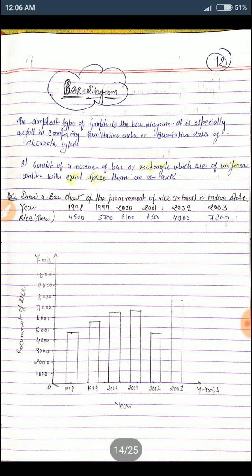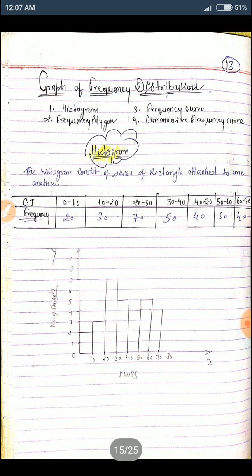Next is the bar diagram. It consists of a number of bars, rectangular or uniform width with equal space on x-axis. Equal space and uniform width, without touching rectangles. It's called the bar diagram. Next is the histogram. Histogram rectangles are attached to one another. It's called the histogram.